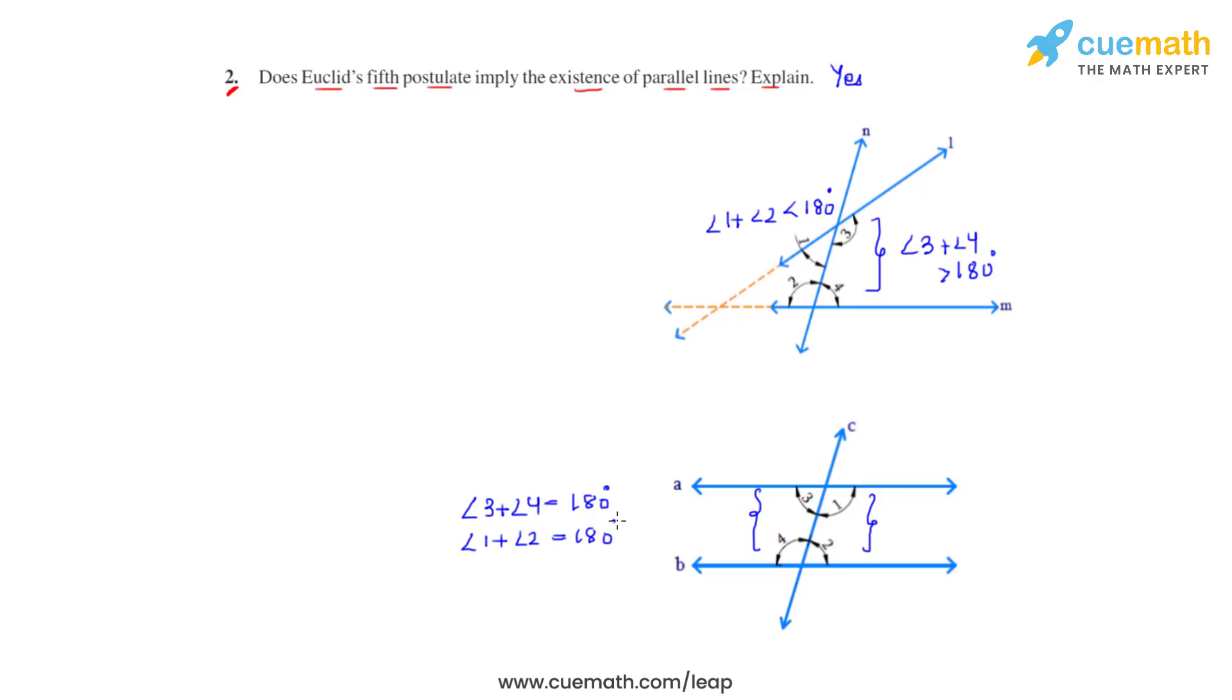We can see that the two lines do not meet at either of the sides, and hence the two lines, line a and line b, are parallel to each other.